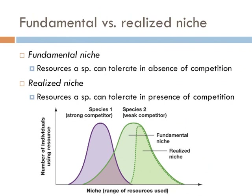However, when a species is in the same environment as one of its competitors, the range of its niche will change, and this is known as its realized niche. In the example on this graph, we have two species competing for the same resource — one is a strong competitor and the other is weak. When these two species come into contact, the strong competitor squeezes out the weak competitor where their range of resources overlap. This is the weak species' realized niche.